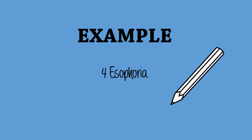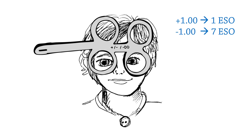Let's go through an example. Say the patient saw four yellow — so four esophoria in this case as their starting point. Next, you're going to place plus one flippers in front of the patient and ask where the top arrow is pointing. You also want to know if the patient can see clearly through the lenses. In this case the patient responds with one esophoria.